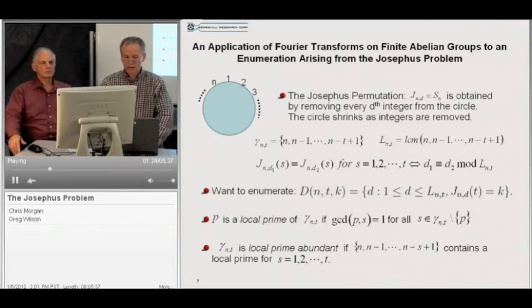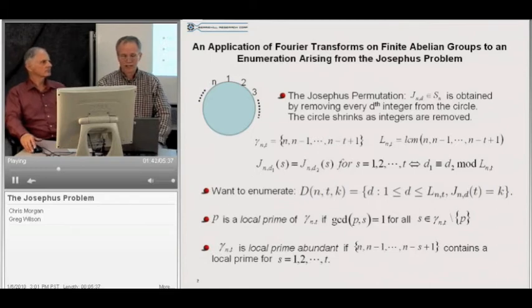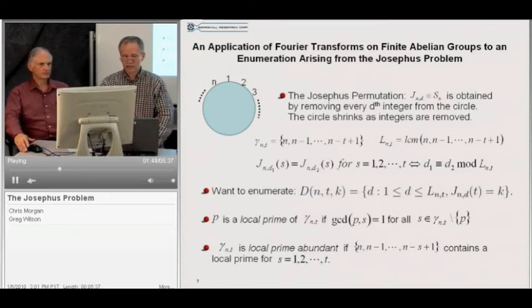The set that we want to enumerate is cap d n t k, and that is defined to be the set of counting parameters d, such that J n d of t equals k, and there is one more restriction, namely that d lie between 1 and L n t. That is because of the condition that we just mentioned above.